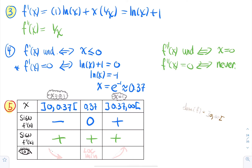So the shape: on (0, 0.37), f' is negative and f'' is positive — the function is decreasing and concave up. On (0.37, ∞), f' is positive and f'' is positive — the function is increasing and concave up. At x = 0.37 we have a local minimum, sitting at the bottom of the valley.